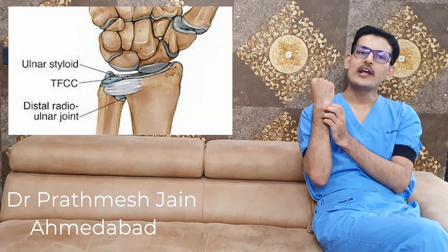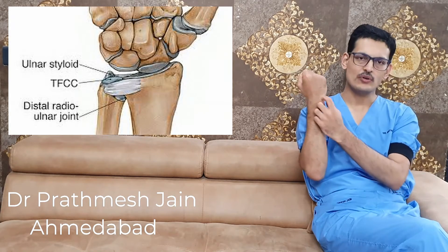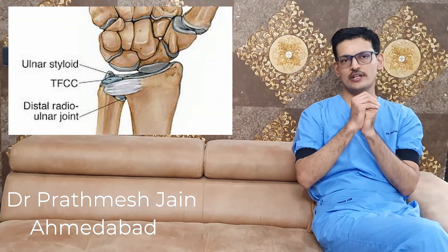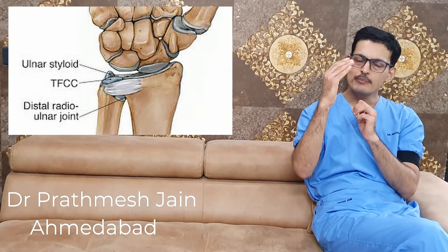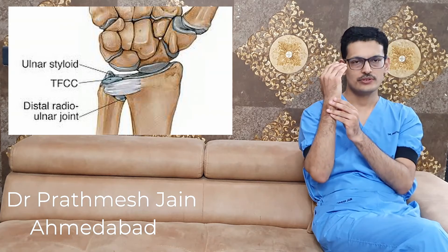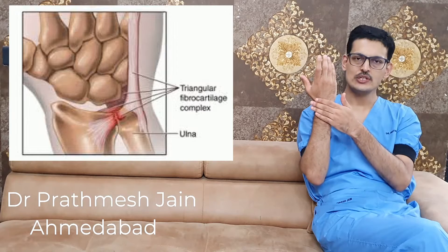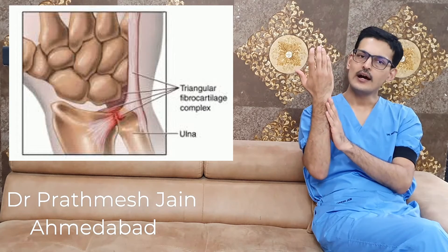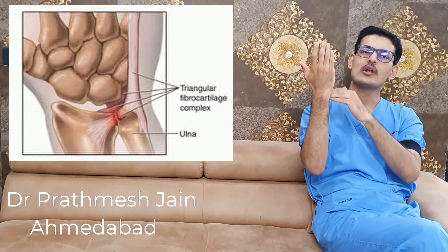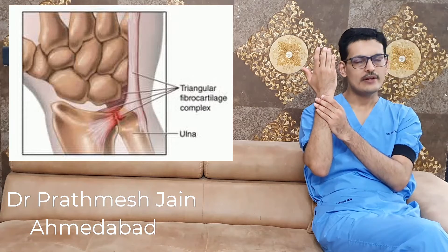TFCC is the triangular fibrocartilaginous complex, which is seen on the ulnar part of the wrist. It acts like a cushion in the wrist joint, positioned between the ulnar and the carpal bones. The attachments of the TFCC are to the radius on the medial side, the ulnar styloid on the lateral side, the carpal bones on top, and the ulnar head on the bottom.